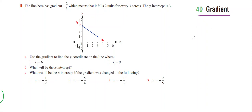Okay, so this is 4D gradient, and it's question number 11. We know the y-intercept is 3, and here the line has a gradient of minus two-thirds, which means it goes down 2 and goes across 3.